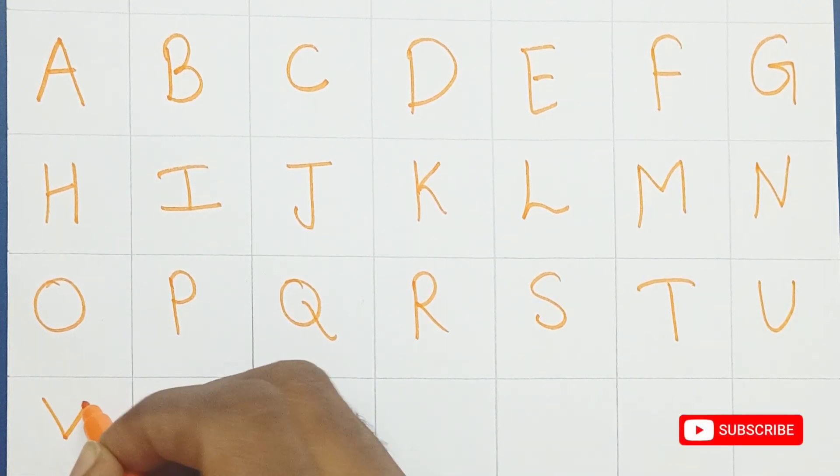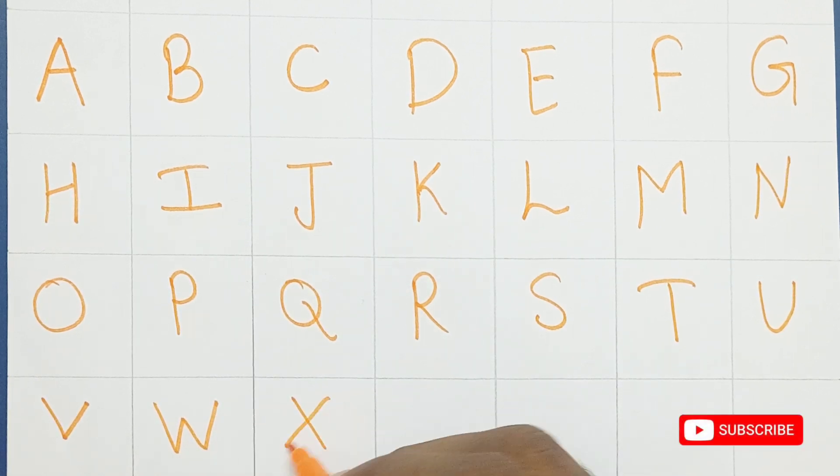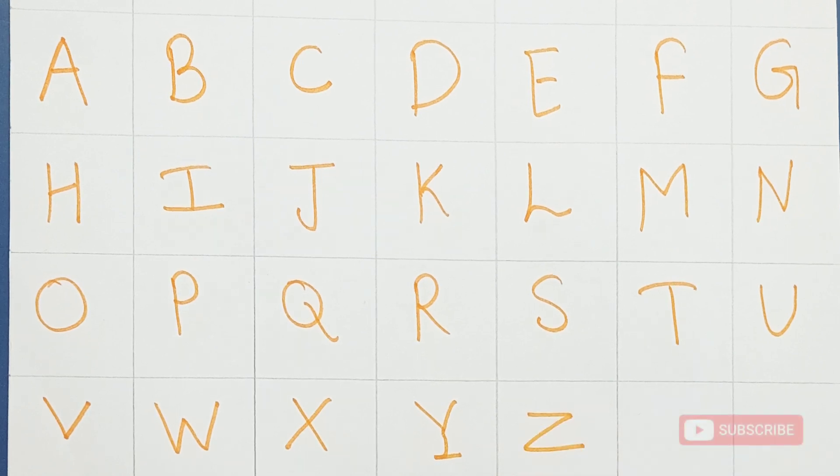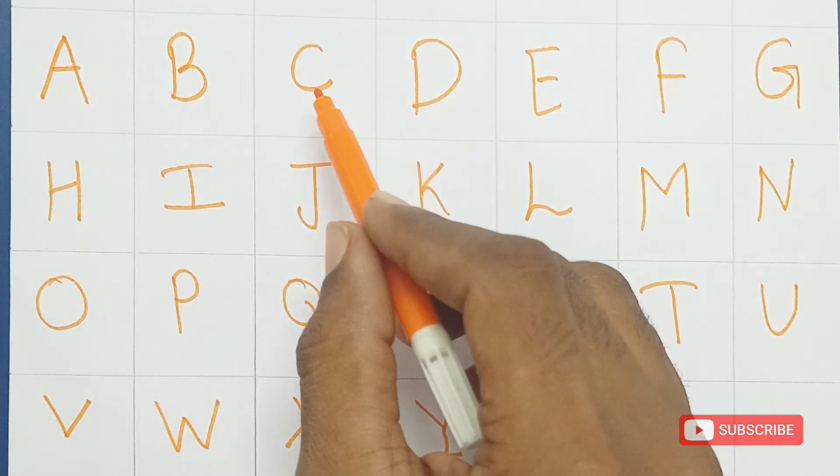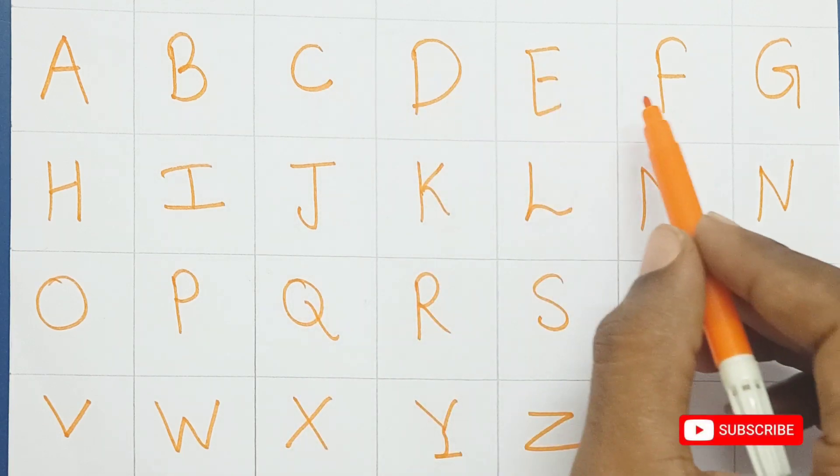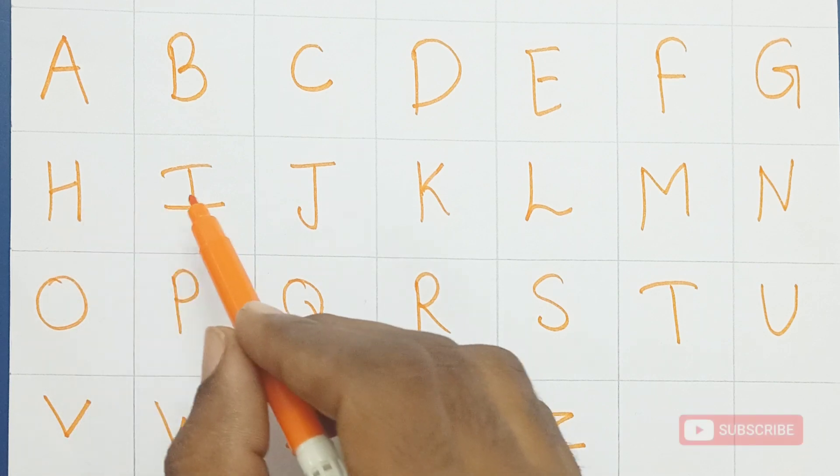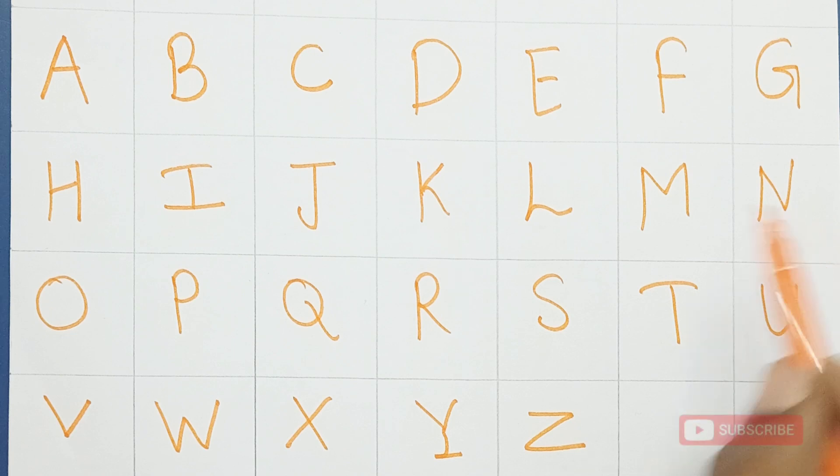V for Van, W for Watch, X for Xylophone, Y for Yoga, Z for Zebra. A B C D E F G H I J K L M N